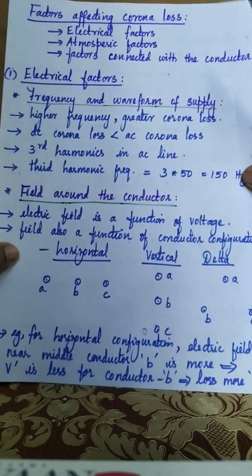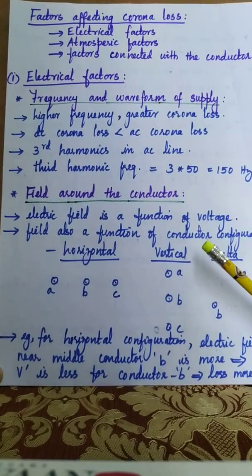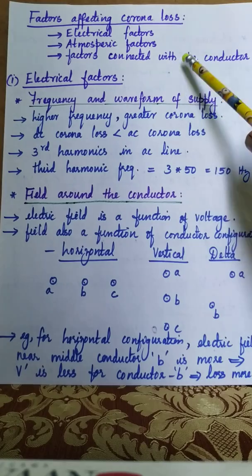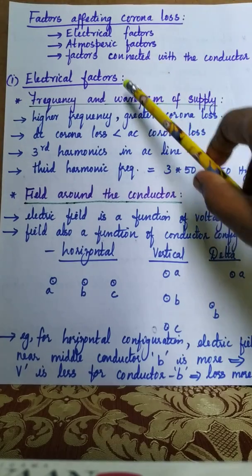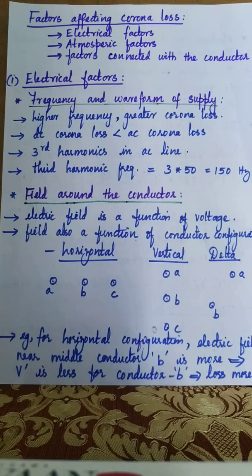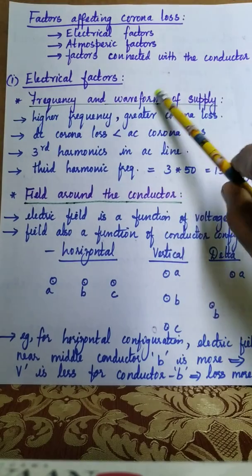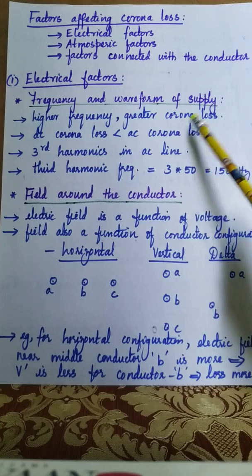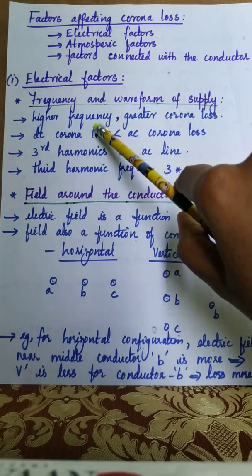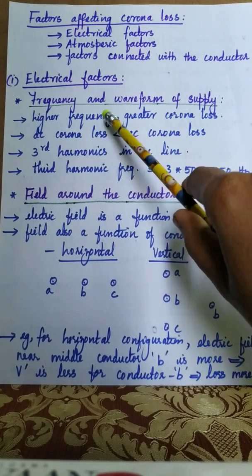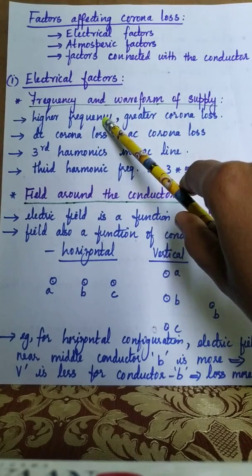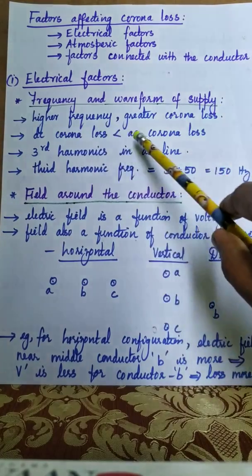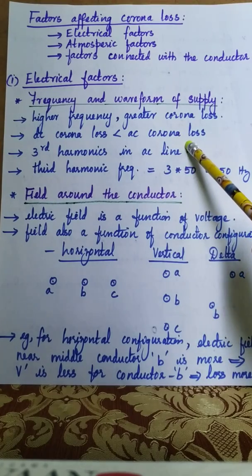Now let us discuss the factors affecting corona loss. There are three main categories: electrical factors, atmospheric factors, and factors connected with the conductor. Under electrical factors, the first is frequency and waveform of supply. Corona power loss is directly proportional to frequency; if we increase the frequency of operation, corona loss also increases. That is why corona loss in a DC line is less compared to an AC line.